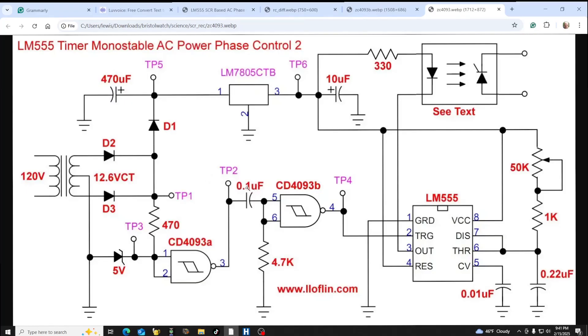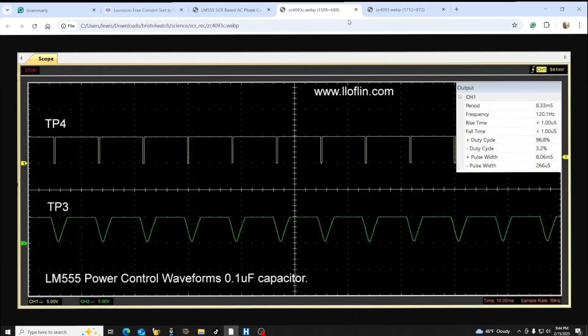All right, my output which was something like two milliseconds wide is too wide for this application. So what I have installed here is this capacitor, 0.1 microfarad, and a 4.7K resistor to ground. It forms a differentiator circuit. And at test point four I get a very narrow negative going pulse to trip my LM555 of 266 microseconds.